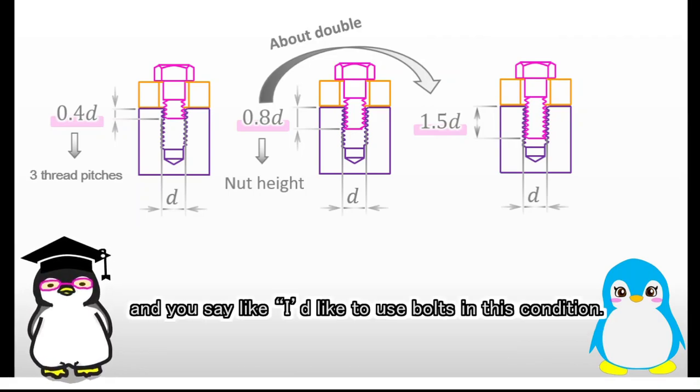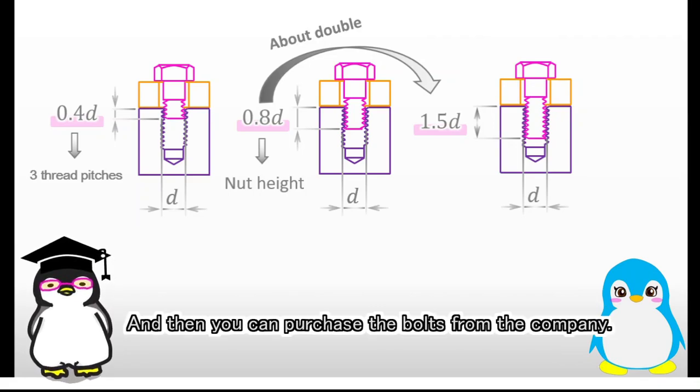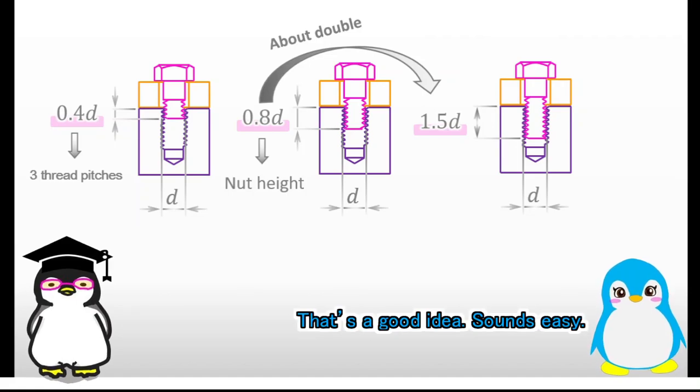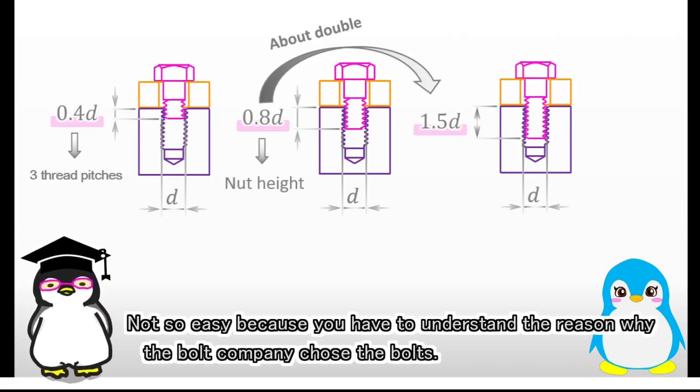If you don't know how to decide the length of bolt depth, you can call a company specialized in bolts and say, I'd like to use bolts in this condition. Could you please select or design good bolts? And then you can purchase the bolts from the company. That's a good idea. Sounds easy. Not so easy, because you have to understand the reason why the bolt company chose the bolts.